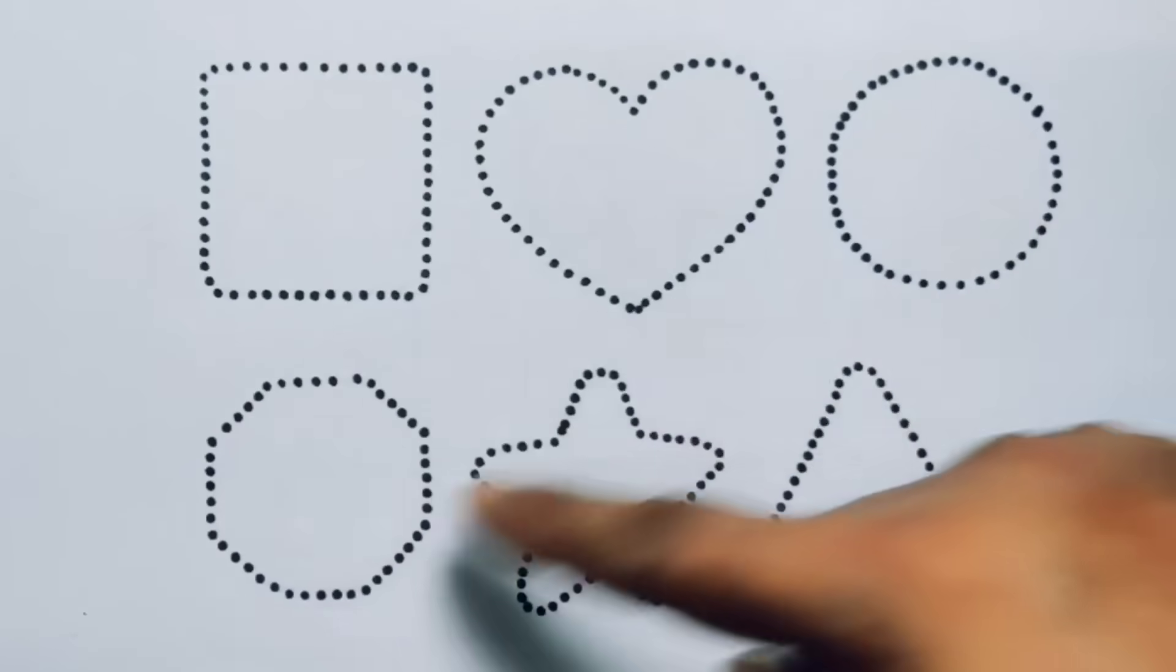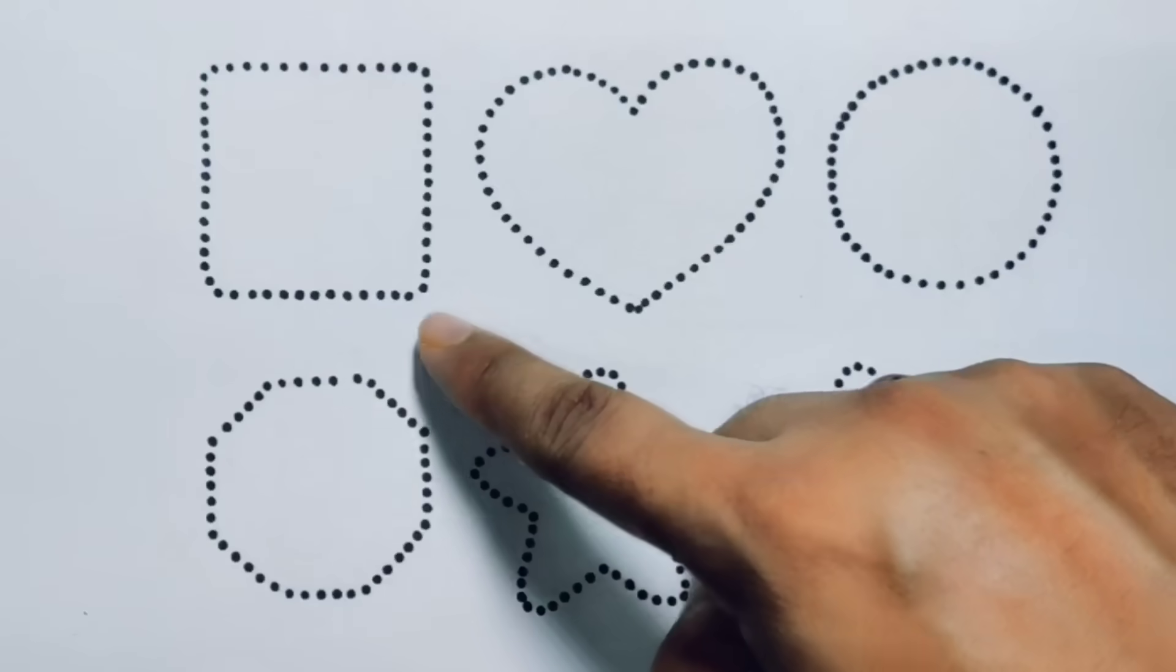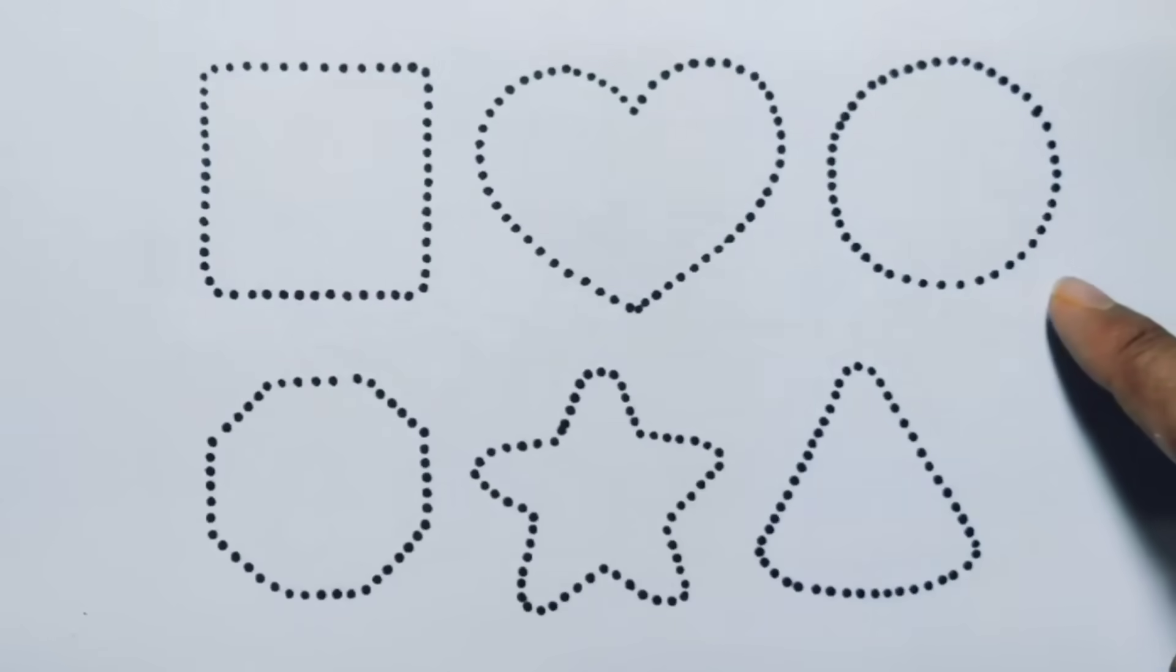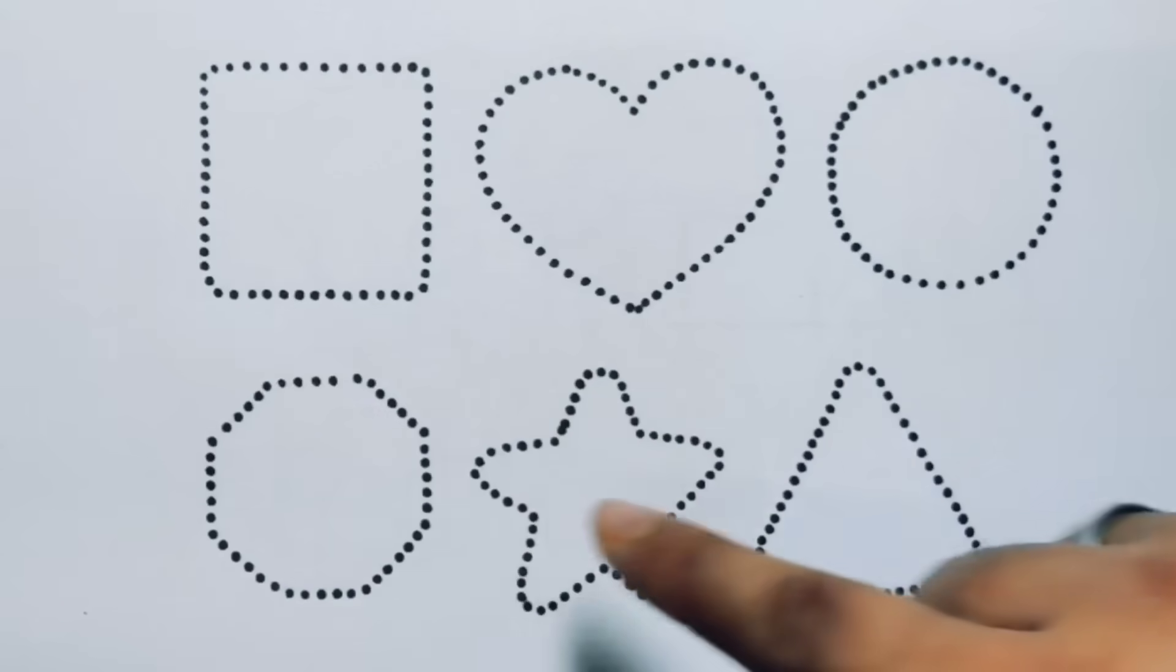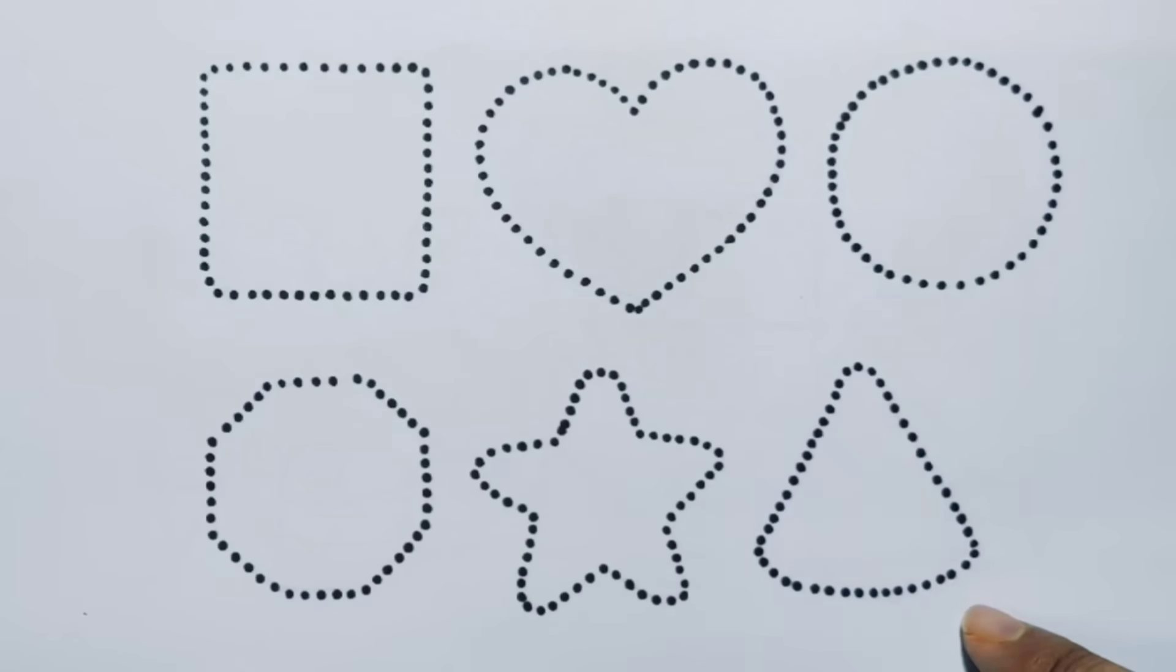Now let's learn the 2D shapes. Square, heart, circle, decagon, star, and triangle. First we are going to draw the shapes.